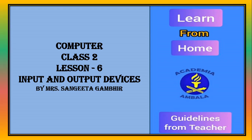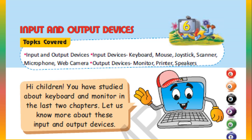Good morning children, welcome to our YouTube channel Academia Ambala. This is your computer period and we are going to start with lesson number 6, that is input and output devices. In this chapter the topics we are going to cover are input and output devices: input devices — keyboard, mouse, joystick, scanner, microphone, web camera — and output devices — monitor, printer and speaker.